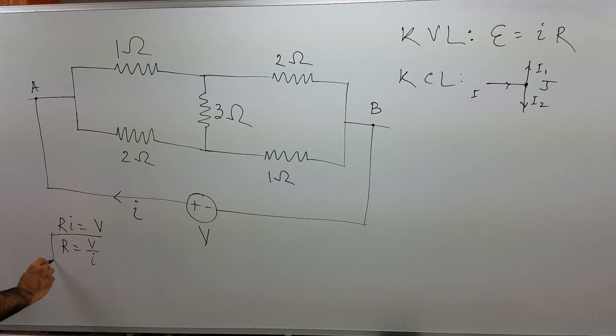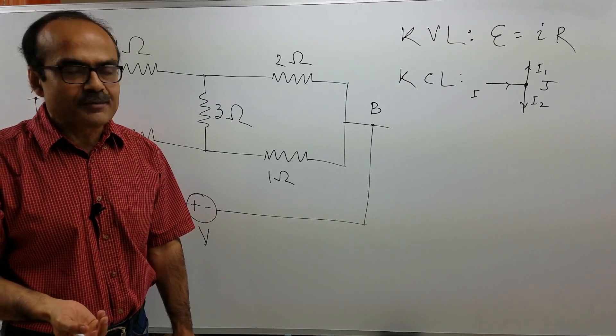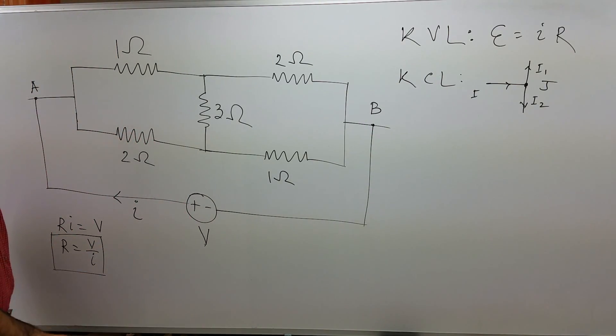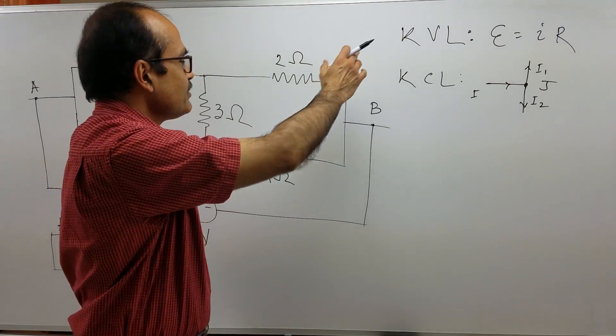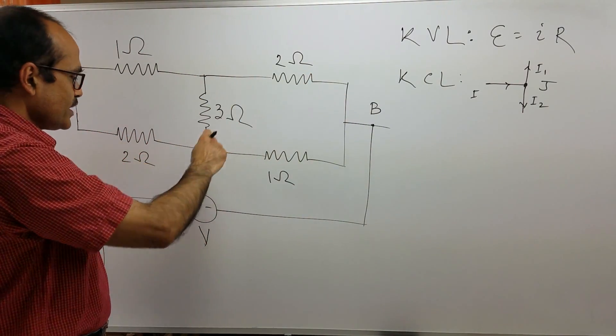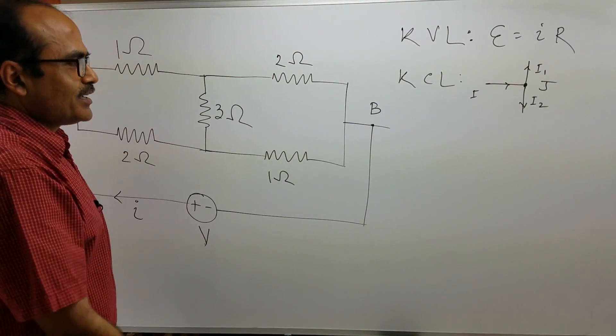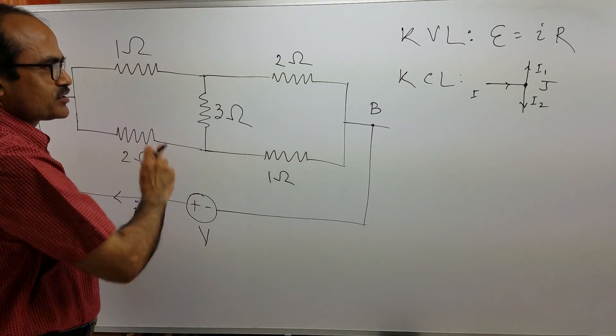This is my answer V over I. My goal is to get V over I. Now, to get V over I, we have to use KVL in this loop, this loop and this loop, and KCL at the junctions.